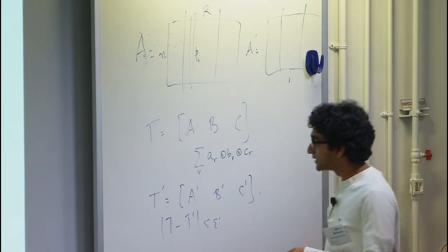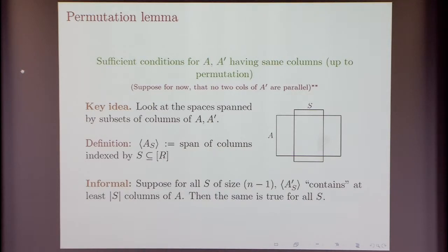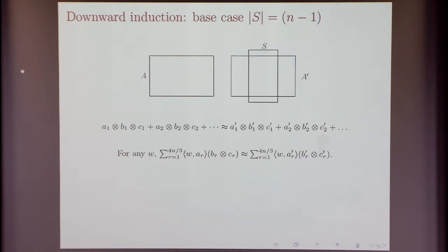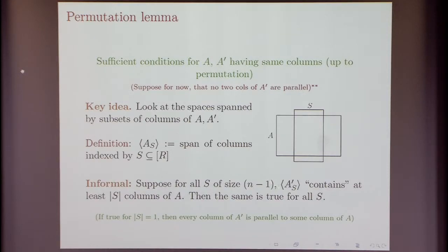If this claim holds, we can also get it for smaller sets by induction down to sets of size 1. If we can show the claim for sets of size 1, it means for every column of A' there is some column in A parallel to it — which is roughly what we wanted to show. For the base case: we have A and A', looking at n-1 columns of A', and we know T and T' are very close to each other.